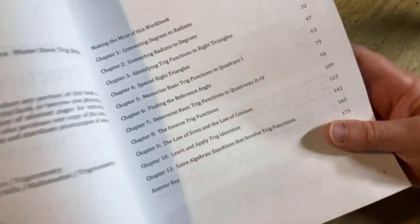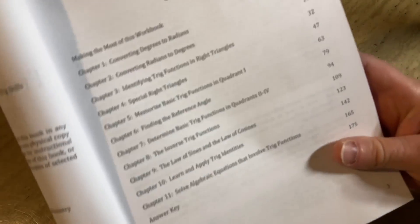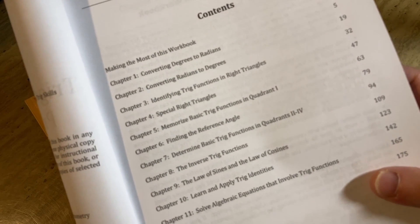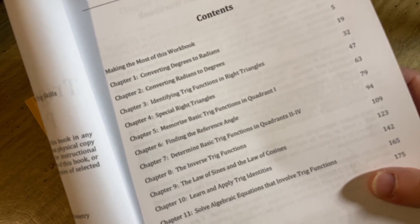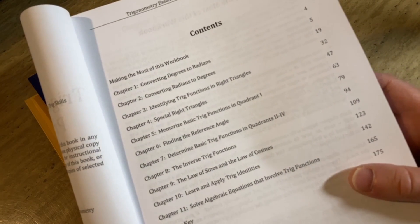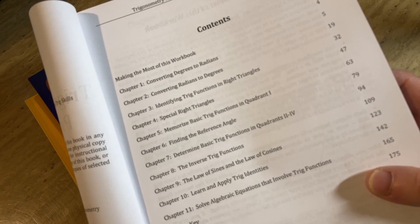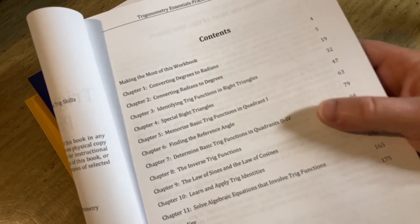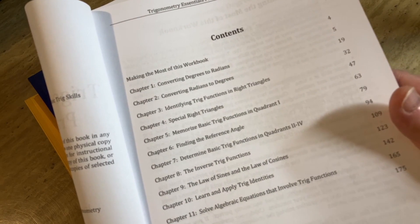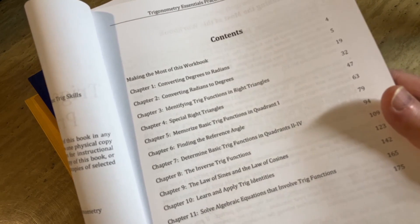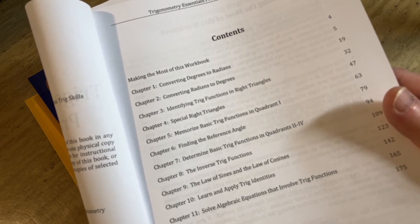Here's the contents. Converting degrees to radians, that's pretty easy, and then converting radians to degrees, identifying the trig functions in right triangles, special right triangles, and it says memorize basic trig functions in quadrant one. That's really cool because that's how I do it - I use a memory trick to memorize the trig functions in quadrant one.